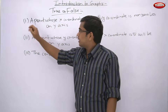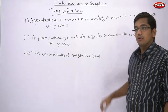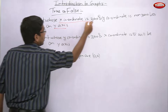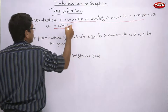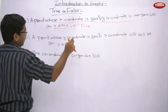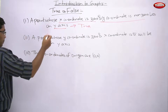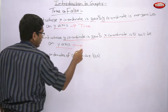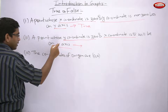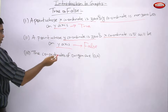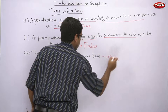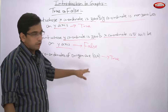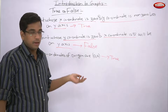Next, let us look at some true or false questions. First: a point whose x-coordinate is 0 and y-coordinate is non-zero lies on the y-axis. We know that if a point lies on the y-axis, its x-coordinate is 0 and y-coordinate is non-zero. So this is TRUE. Second: a point whose y-coordinate is 0 and x-coordinate is 5 will lie on the y-axis. We know if y-coordinate is 0, it lies on the x-axis, not the y-axis. So this is FALSE. Third: the coordinates of the origin are (0, 0) — this is TRUE, because origin lies on both axes, so both x and y coordinates are 0.